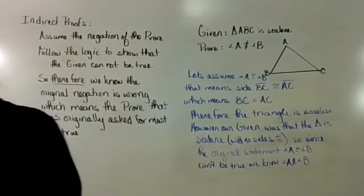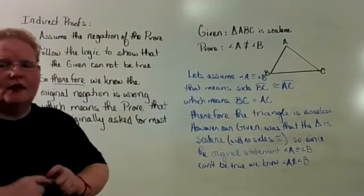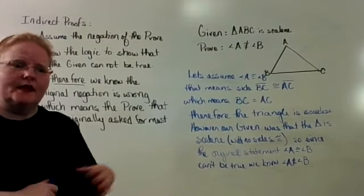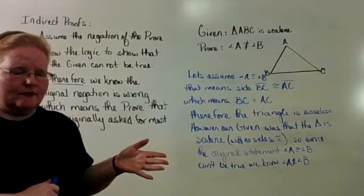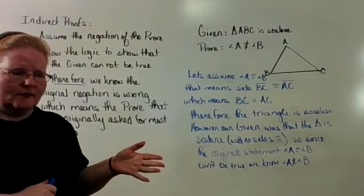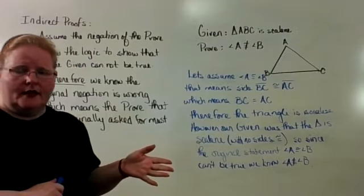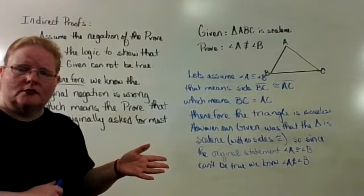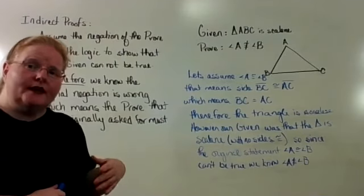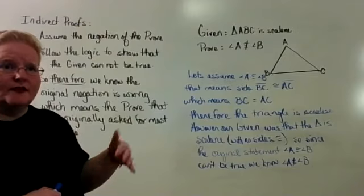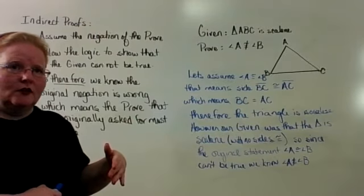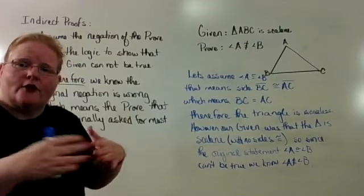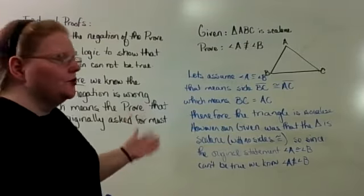We know that angle A must not be congruent to angle B. If there had been some other option. For example, you can't say if it said prove that the figure with three sides is a triangle or is a right triangle. You can't say that because it's an isosceles triangle instead of a right triangle because there are other kinds of triangles that you can have. There are other options available to you. So you can't use an indirect proof for that.